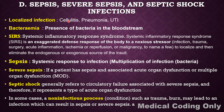Cellulitis is a localized infection of the skin. Pneumonia involves the respiratory system — it is a lung infection. Urinary tract infection is also a localized infection.